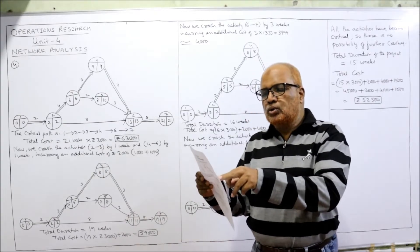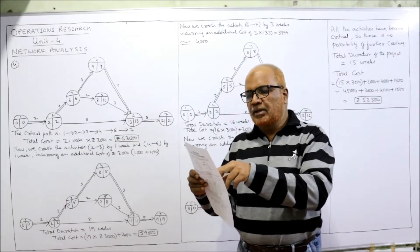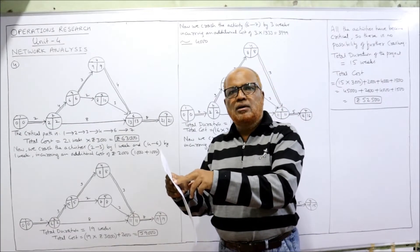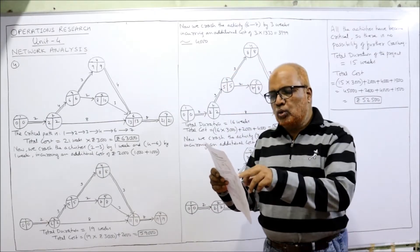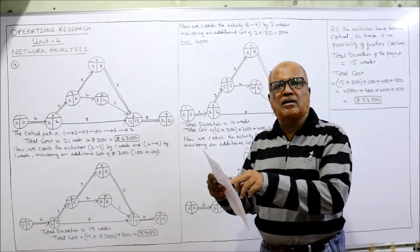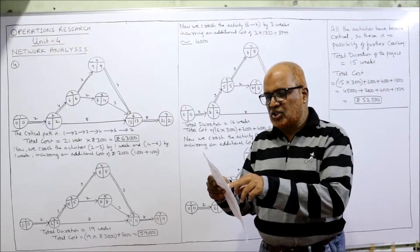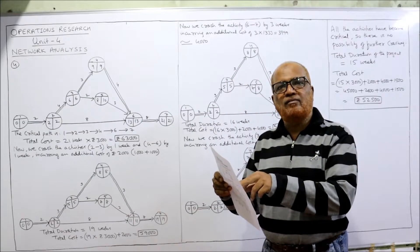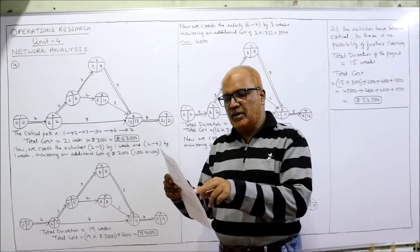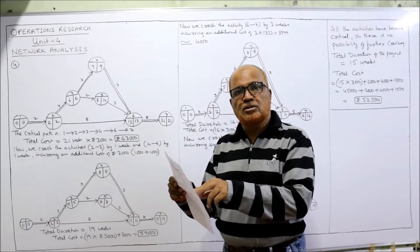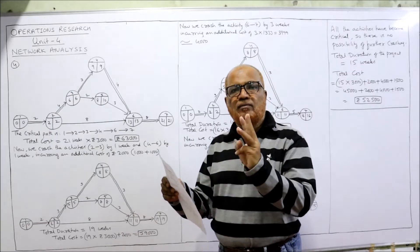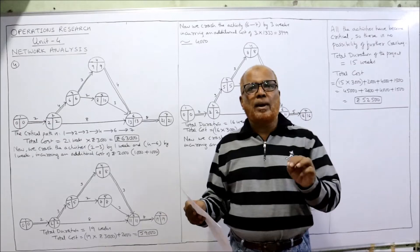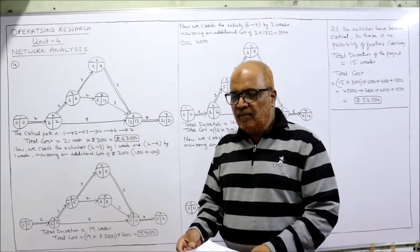For activity 2→3: normal time 4 weeks, crash time 3 weeks — we can crash 1 week at an additional cost of 1000 rupees. For 2→6: 8 and 8, no crashing possible. For 3→4: we can crash 1 week at an additional cost of 1500. For 3→5: 2 and 2, no crashing possible. For 4→6: 4 and 3, 1 week possible. For 5→6: no crashing. For 6→7: normal time 8 weeks, crash time 5 weeks — 3 weeks can be crashed at 1333 rupees per week. The indirect cost is 3000 per week.